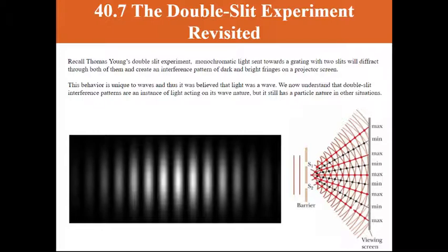We now understand that light can also act like a particle. So in regards to the Double Slit Experiment, it's just an instance of light acting like a wave, creating interference on the screen. But we know that in other situations, like Compton scattering, it acts like a particle.